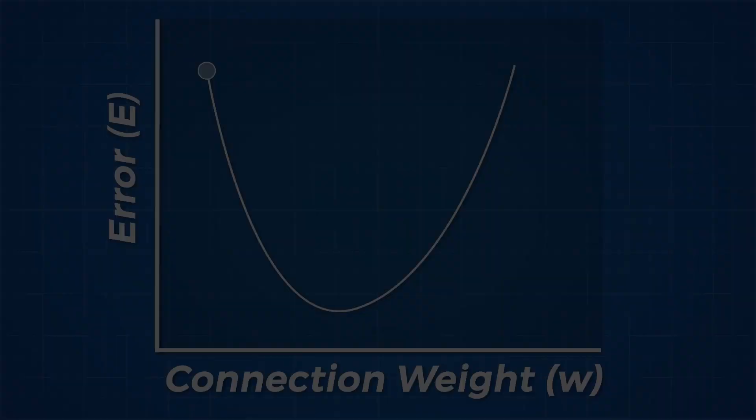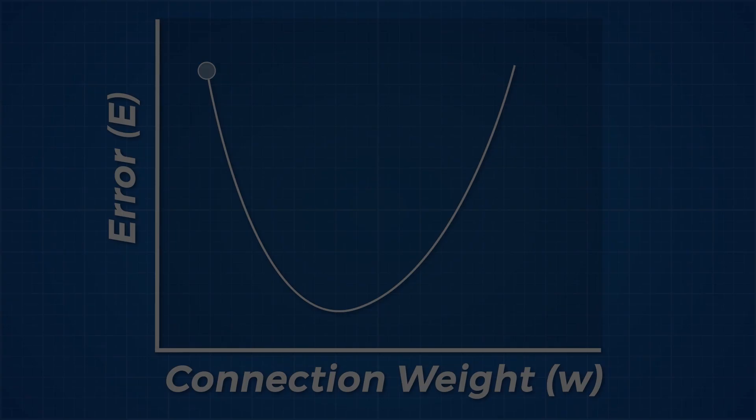Then, once it knows which direction it needs to move towards to get to the correct weight of each connection, it needs to know how much to move in that direction. This is determined by something called the learning rate.